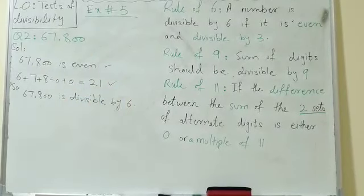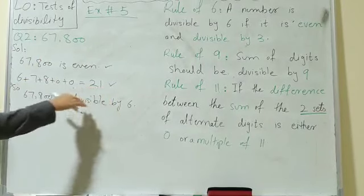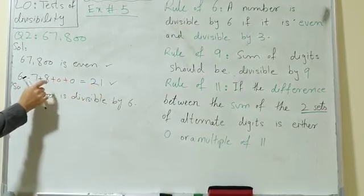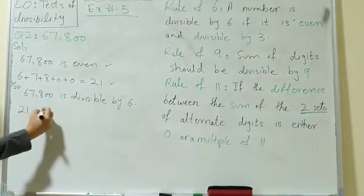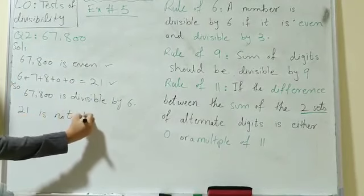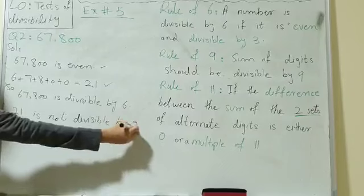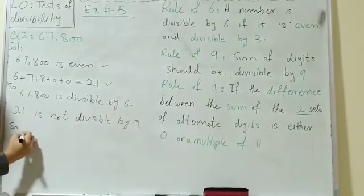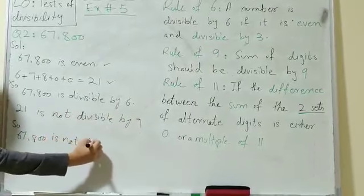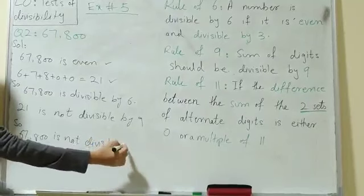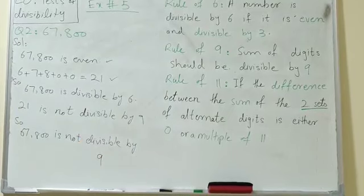Now let's check 67,800 for divisibility by 9. The rule says the sum of the digits should be divisible by 9. The sum is 21, and 21 is not divisible by 9, so 67,800 is not divisible by 9.